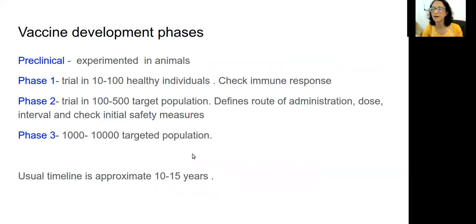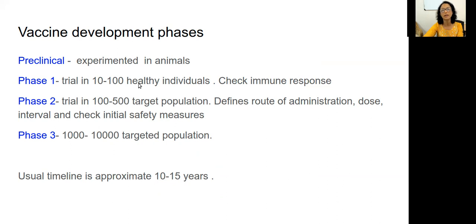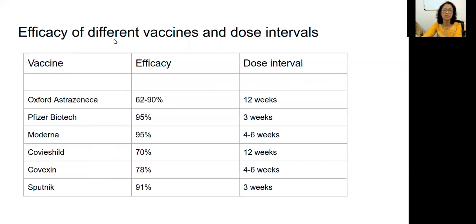Regarding how vaccines are developed: vaccines usually go through four phases. The pre-clinical phase is experimented in animals first. Phase one involves 10 to 100 healthy individuals to check whether an immune response is developing. Phase two involves 100 to 500 targeted population, and phase three involves 1,000 to 10,000 targeted population. The usual timeline is 10 to 15 years from experimentation to full production. Regarding efficacy: Oxford-AstraZeneca is 62 to 90 percent, Pfizer-BioNTech is 95 percent, Moderna is 95 percent, Covishield is 70 percent, Covaxin is 78 percent, and Sputnik is 91 percent. Dose intervals range from roughly three weeks to 12 weeks.